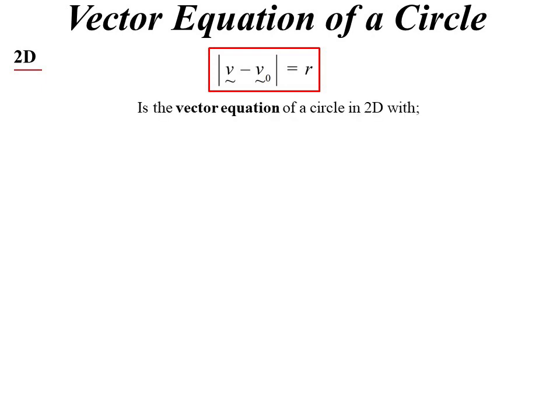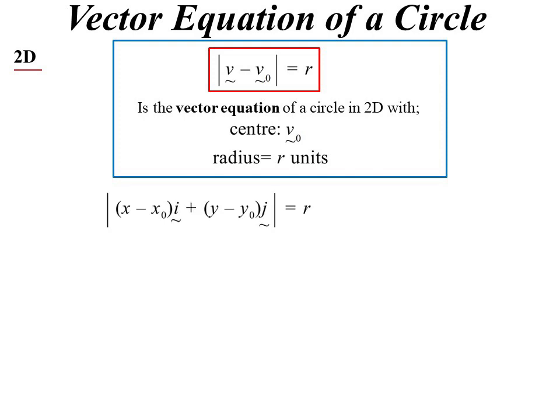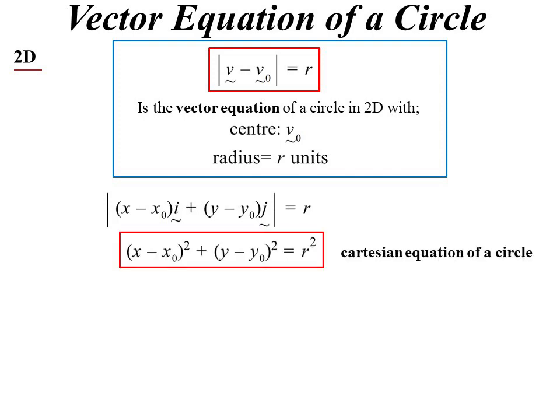That would be a vector equation of a circle in two dimensions. Centre would be v₀, and radius is r units. So if I break it up into its components, x minus x₀ in the i direction, y minus y₀ in the j direction, and then we know that will be (x - x₀)² + (y - y₀)² = r², what we recognise to be the Cartesian equation of a circle.